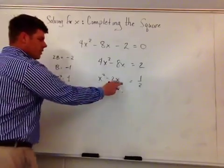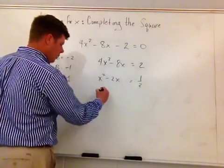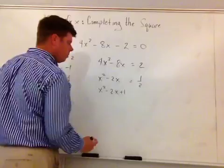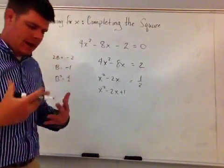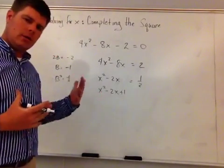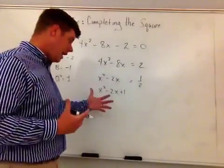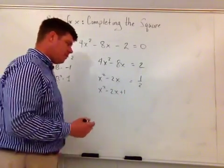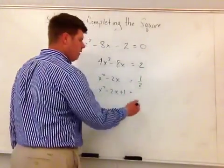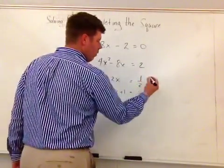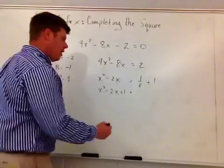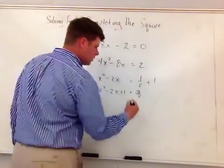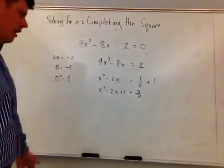So if I complete the square here, I would add 1. So I would have x² - 2x + 1. Now, the important thing is that now because I am on an equation here, that once I add something in, I must keep the equation balanced. So what I have to do is I have to add it to the other side too. So 1/2, I'm going to add 1 to show my work here, and you get 3/2. So this is 3/2. So 1 + 1/2 is 3/2.